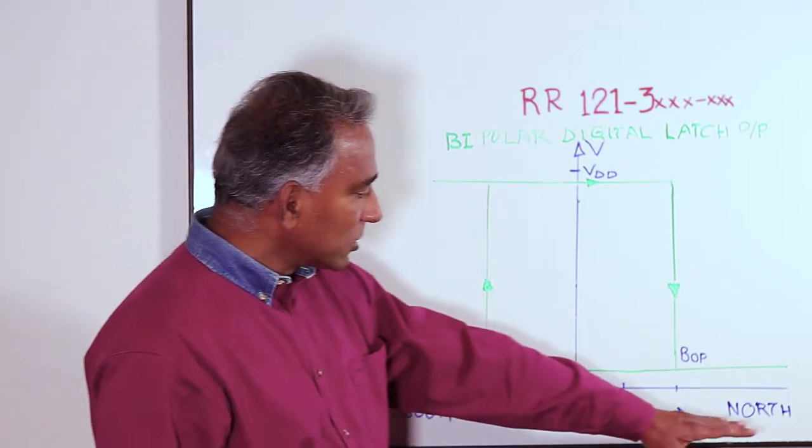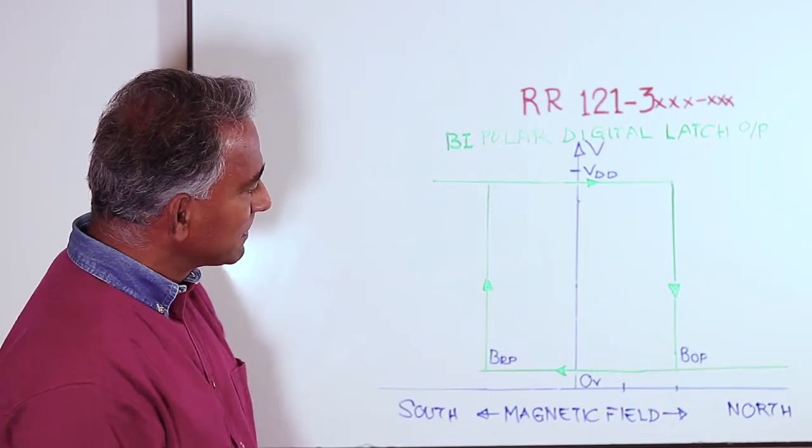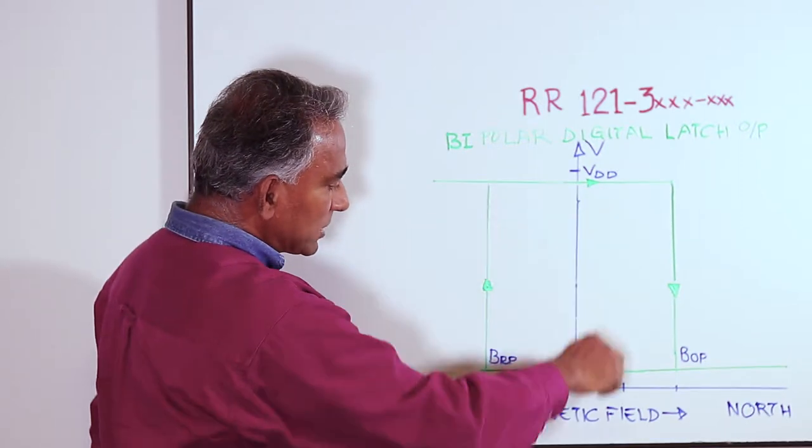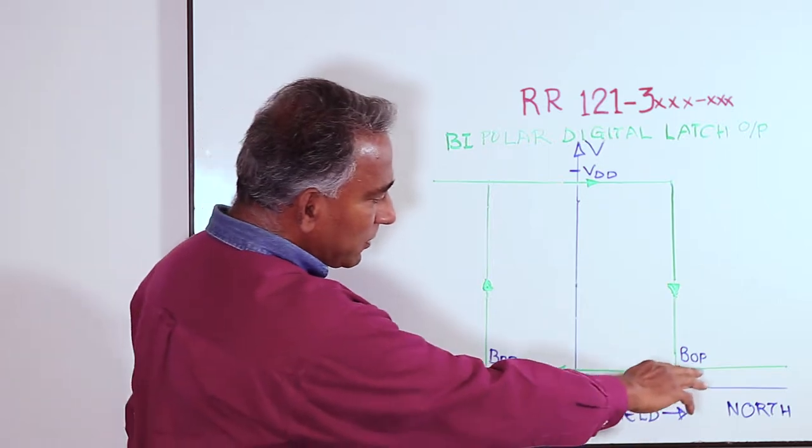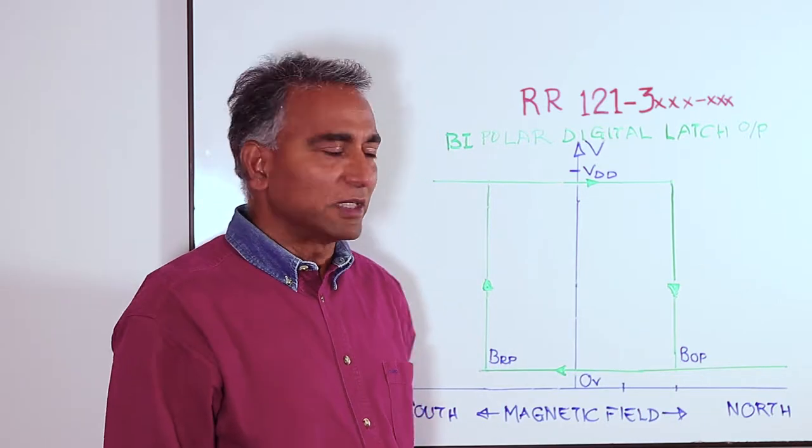Let's assume it's a north pole of the magnet approaching the sensor. As the field strength increases from zero to increasing north pole field, at the point BOP or the operate field for the sensor,